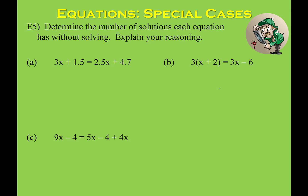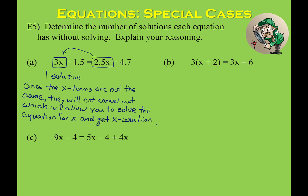In our next examples, we'll determine how many solutions there are without solving the equations. For equation A: if I look at the left and right sides, the x terms do not have the same coefficients — I have 3x and 2.5x on opposite sides. When I subtract one over, they won't cancel, which means I can solve the equation for x and get one solution. Since the x terms are not the same, they won't cancel when combined using opposite operations, allowing one solution.